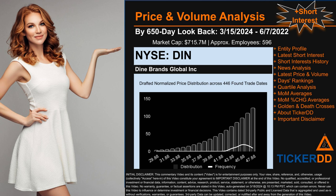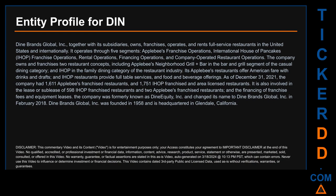Hello, my name is Carl. I searched the public web to find information about the company behind this ticker. Dine Brands Global Inc, together with its subsidiaries, owns, franchises, operates, and rents full-service restaurants in the United States and internationally. It operates through five segments: Applebee's franchise operations, IHOP franchise operations, rental operations, financing operations, and company-operated restaurant operations.